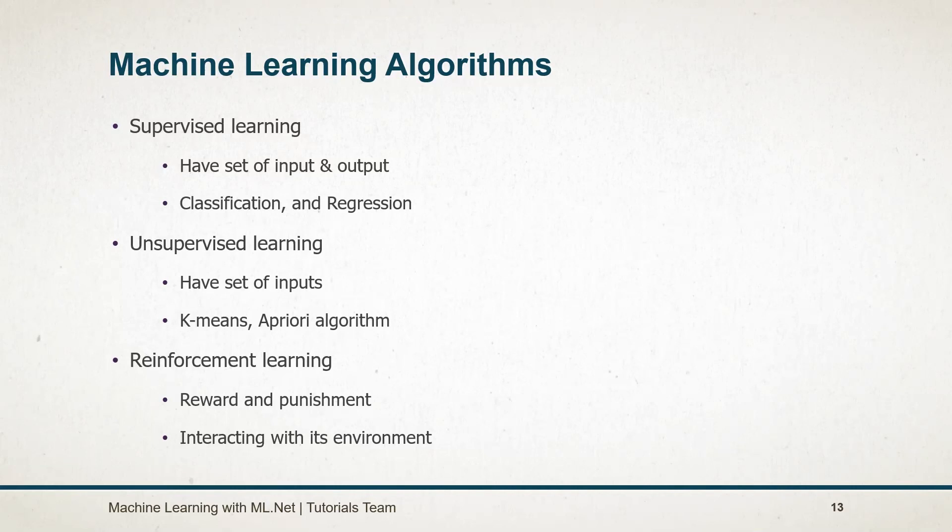Reinforcement learning algorithm uses a system of reward and punishment. We do not need labeled input or output pairs. Reinforcement learning agents learn by interacting with their environment. The agent receives rewards by performing correctly and gets penalties for performing incorrectly. Self-driving cars are an example of this algorithm.